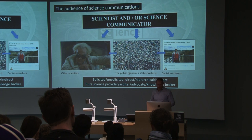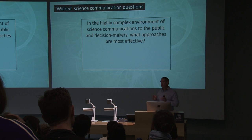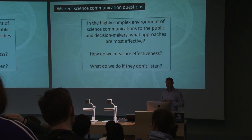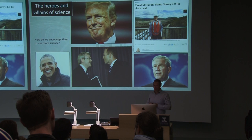The sphere is complicated. It goes everywhere, and it's hard to objectify. In the highly complex environment of science communication to the public and decision-makers, what approaches are most effective? This is really hard. Sometimes something works, and you do the exact same thing the next time and you get nowhere. So we want to try to measure effectiveness. And we want to think about things like what we do if they don't listen — and they could be anyone: the public, decision-makers, a whole variety of people.